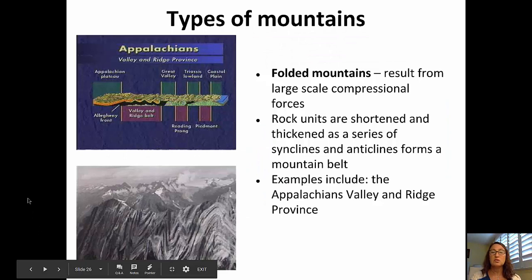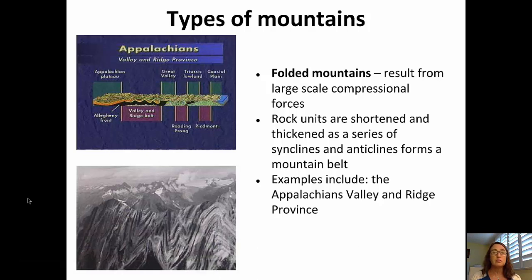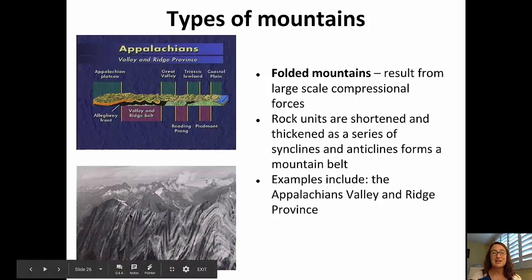The second type is folded mountains, which result from large-scale compressional forces. At a convergent plate boundary, rock units are shortened and thickened vertically as a series of repeating anticlines and synclines forms a mountain belt. Examples include the Appalachians and the Valley and Ridge Province. In the bottom picture, you can see the crenulation of sequential anticlines and synclines in a folded mountain belt.